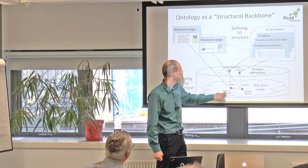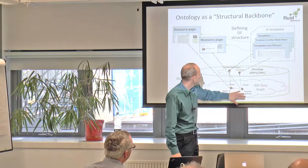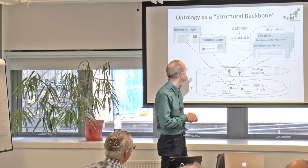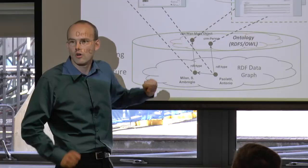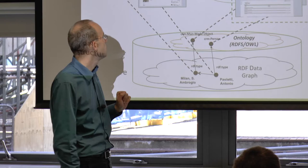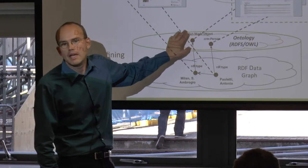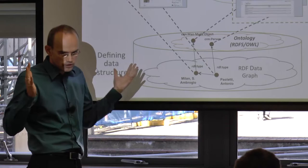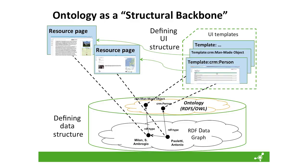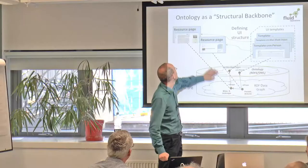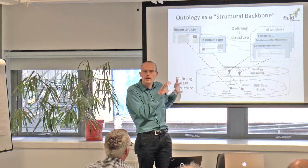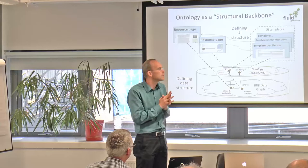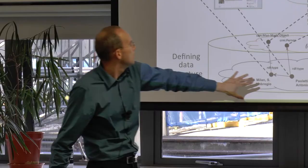Here I have two examples from the actual CLAROS dataset. There's an Antonio Paoletti who has produced an artifact — a photograph of Milan. We have a relationship in this data graph. These resources are typed according to the CRM ontology: Antonio Paoletti is a CRM Person, and the photograph is typed as a Man-Made Object. For surfacing these resources, every resource has a corresponding page; we can also look at the data in tabular view to see the underlying triples, or as a graph.